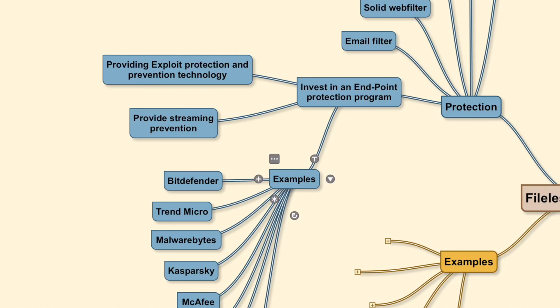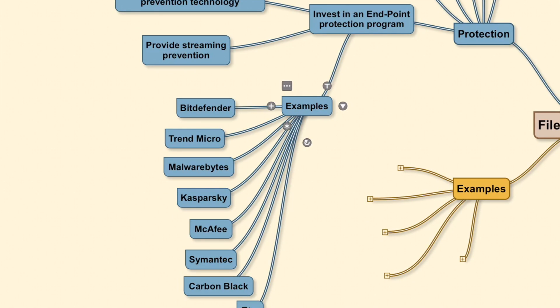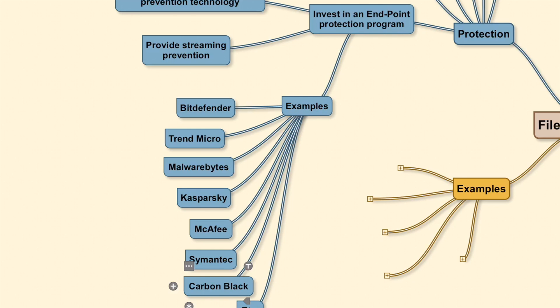Here are some examples of protection suites available in the market. Apart from these, there are many antivirus and anti-malware protection suites — do your due diligence to find the best fit for your organization. Products include BitDefender, Trend Micro, Malwarebytes, Kaspersky, McAfee, Symantec, and Carbon Black. It is possible to deploy more than one protection layer on an endpoint — for example, BitDefender antivirus combined with Malwarebytes, or Trend Micro with a Malwarebytes layer on top. Traditional antivirus software excels at protecting against older, well-known threats, while software like Malwarebytes is very good at identifying and tracking modern-generation threats.